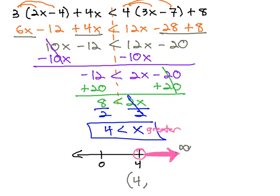Comma, the graph goes off forever to infinity, which always gets a curved parentheses. We now have our solution in interval notation.